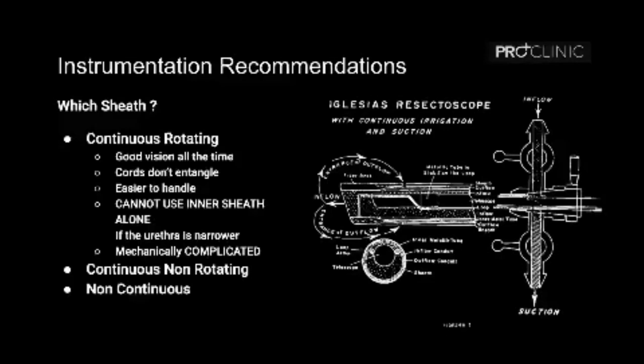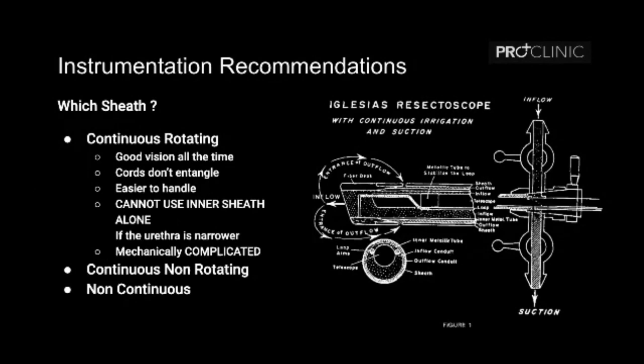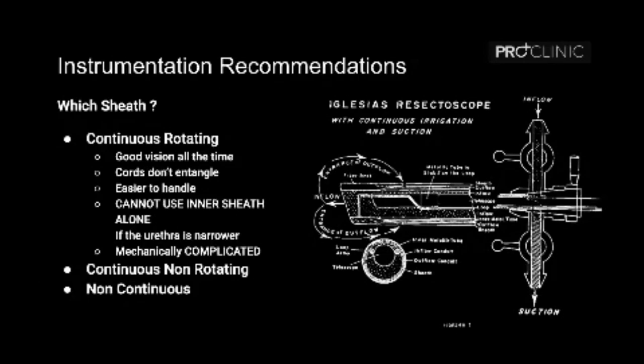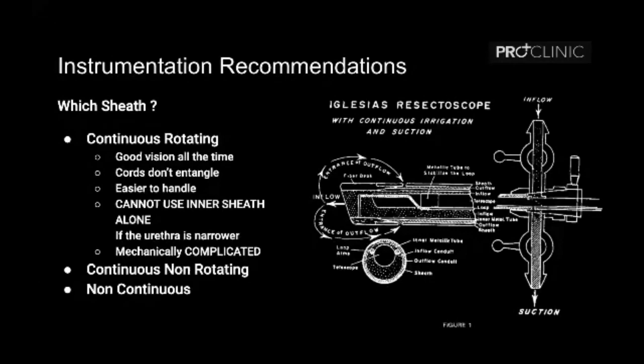Going back to the presentation: the advantage of the continuous rotating sheet is good vision at all times and cords don't entangle — it's easier to handle. But there is a disadvantage: the inner sheet does not have any inlet or outlet, so if the urethra is narrower you cannot use the inner sheet alone as a non-continuous resectoscope. In the older non-rotating version, you still had the option of using just the inner sheet — performing the resection by allowing water to go in and cutting, then removing chips subsequently.